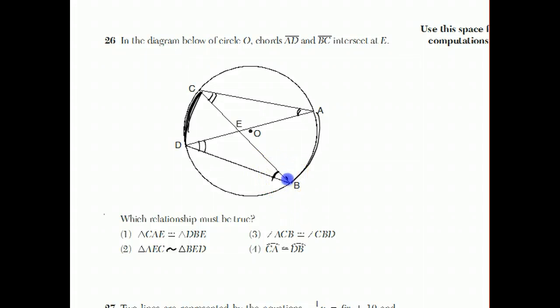Now arc AB here is intercepted by angle D and also by angle C. So even if you don't know the rule about the arc being double the angle, two angles that intercept the same arc have to be congruent. By intercept, I mean if you draw this angle out between the two sides of the angle, you have this arc.